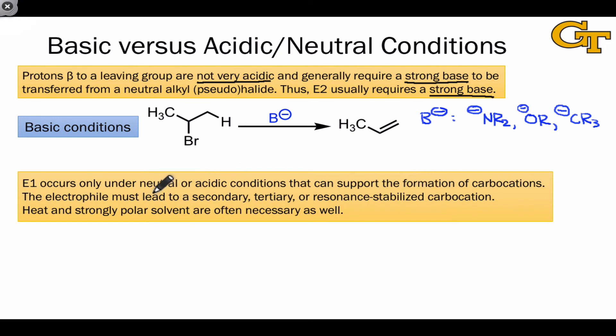On the other hand, E1 requires reaction conditions that can support the formation of carbocations, that is, neutral or acidic reaction conditions. The electrophile has to undergo DN to yield a secondary, tertiary, or resonance-stabilized carbocation intermediate. Primary carbocations are not allowed.